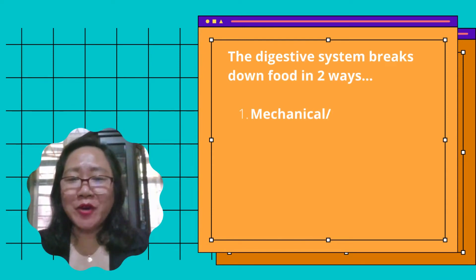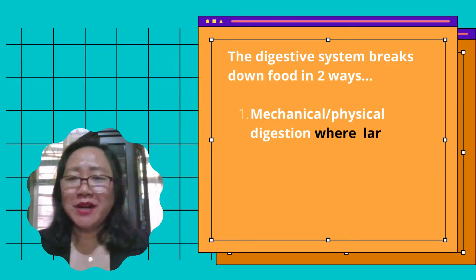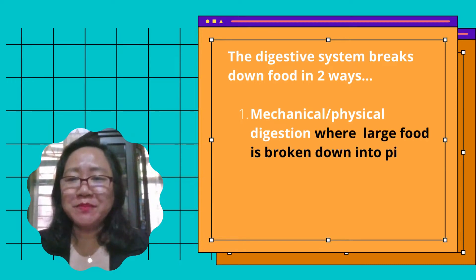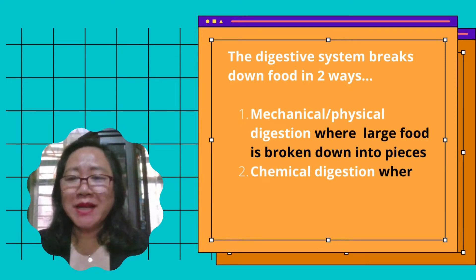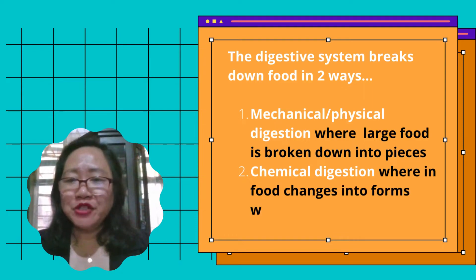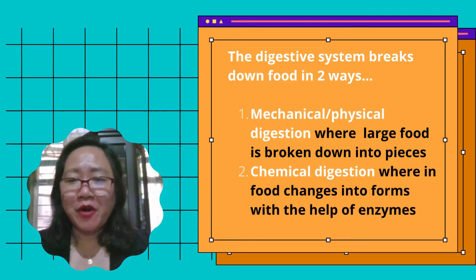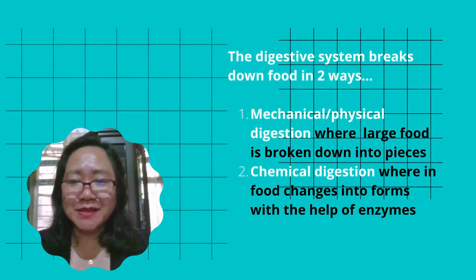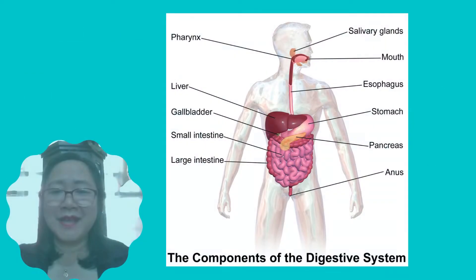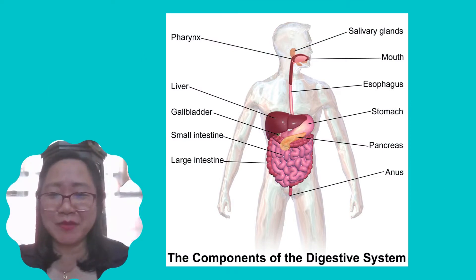One is mechanical or physical digestion, where large food is broken down into pieces. Two, chemical digestion, wherein food changes into forms with the help of enzymes. This is the digestive system showing its components, parts, or organs involved.